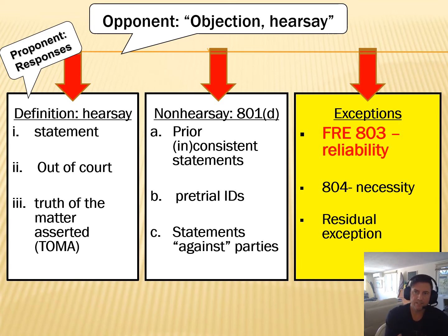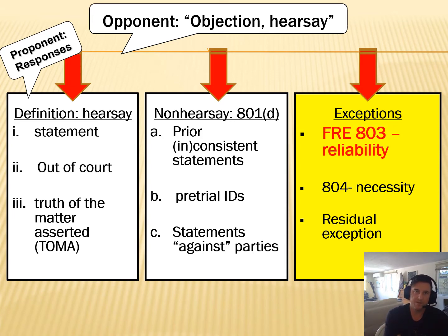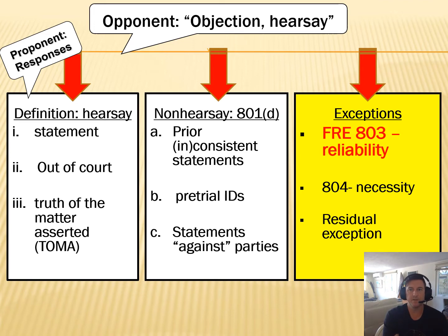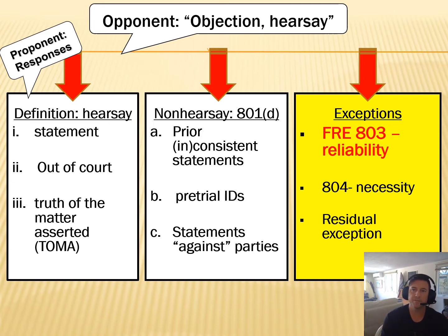This video has to do with 803.3, what's called the state of mind exception. In a different video I'll talk about how the state of mind exception under 803.3 is different than an argument that you might make that the statement is not hearsay because it's not offered for the truth of the matter asserted, but instead offered as circumstantial evidence of the declarant's state of mind. Two different things — one's an exception, one's a definitional argument as to why something's not offered for the truth. I'll separate that out in a different video.